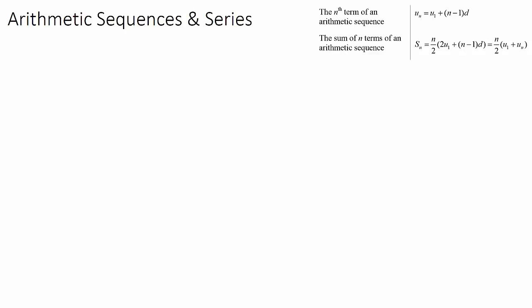An example of an arithmetic sequence might be 4, 7, 10, 13, and so on. There is a letter D which we use to denote our common difference. So in this case, D would be 3, which is positive 3, and that's going to be important when we use some of our arithmetic sequence formulas. I have put the IB formulas up here, which I will show you how these work.